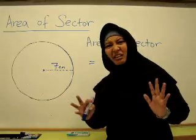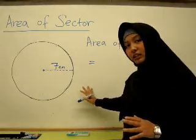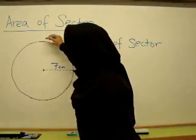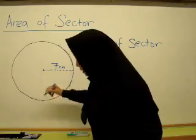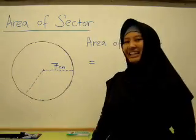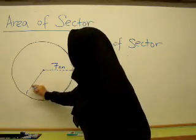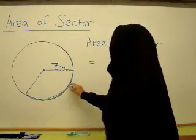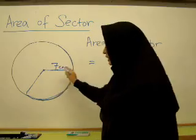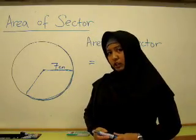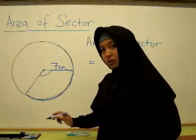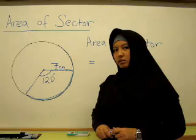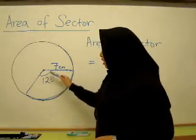Now let's talk about area of sector. What is a sector? In a full circle, I can have a sector. For example, if this is a pizza and I cut the pizza into a few slices — suppose I cut this piece for Manwai. This nice big piece is for Manwai. So what is the area of this piece of pizza? The angle here I measure is 120 degrees, and the radius is 7 cm. What would be the area of this slice of pizza, also known as a sector?